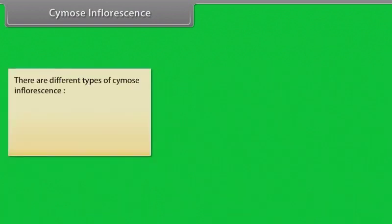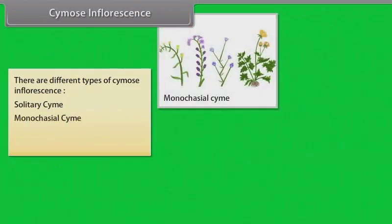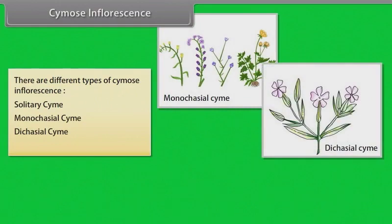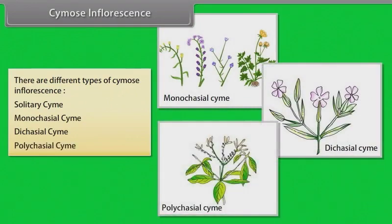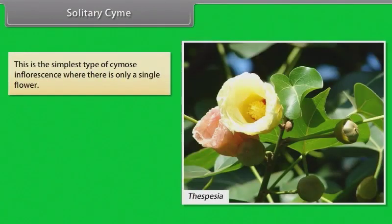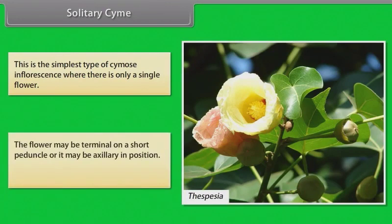There are different types of cymose inflorescence: solitary cyme, monochasial cyme, dichasial cyme, and polychasial cyme. Solitary cyme is the simplest type of cymose inflorescence, where there is only one single flower. The flower may be terminal on a short peduncle or it may be axillary in position. Example: Thespesia.